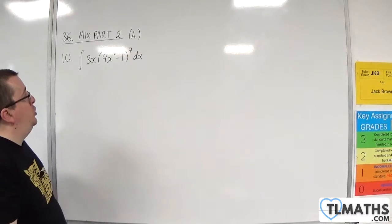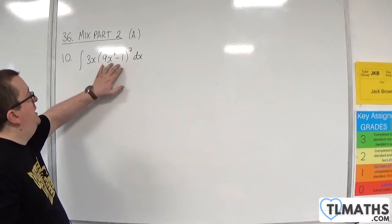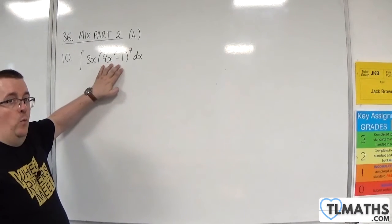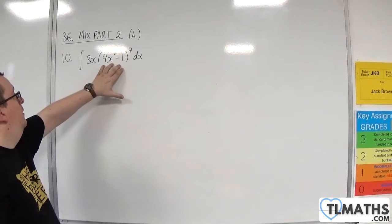Alternatively, you can do this by substitution, where you would let u be the 9x squared, take away 1. And I'll go through that as well in a moment.